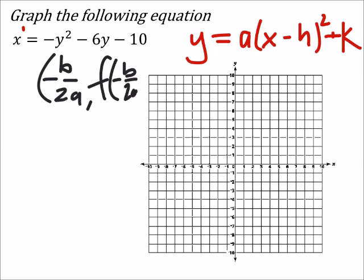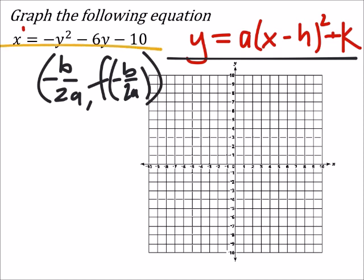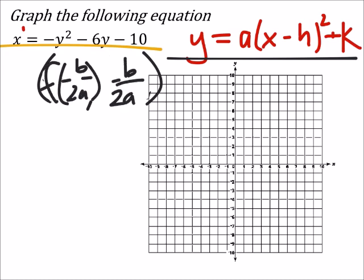Negative b over 2a works for y equals a quadratic in x. The equation we have right here is x equals a quadratic in y, which means we're going to have to switch the two. We're inverting those x and y values, so we're going to solve for the y-value first. This is how we find the vertex — specifically for an inverted parabola.